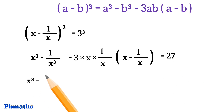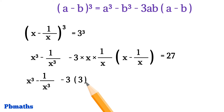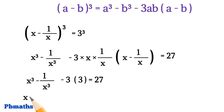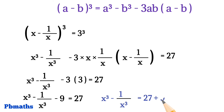Then x cube minus 1 by x cube minus 3 into x and 1 by x cancel. We have the value of x minus 1 by x which is 3, so 3 into 3 gives us 9, equals to 27. So x cube minus 1 by x cube minus 9 equals to 27. Shifting that minus 9 to the other side of the equal gives us plus 9. So at last, x cube minus 1 by x cube gives us 36.